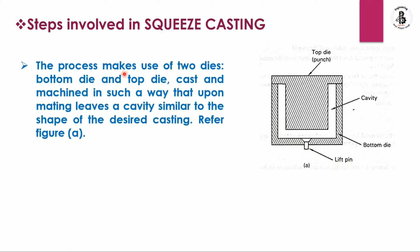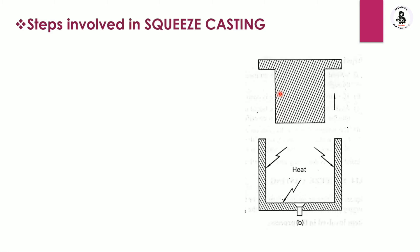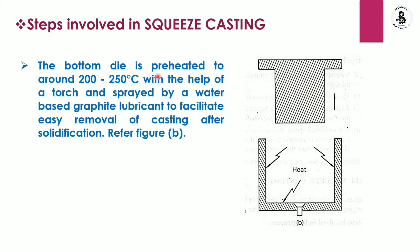The process makes use of two dies — a bottom die and a top die — cast and machined such that upon mating they leave a cavity similar to the shape of the desired casting. Complex geometries can also be produced. The bottom die is preheated to around 200 to 250 degrees centigrade with a torch and sprayed with a water-based graphite lubricant to facilitate easy removal of the casting after solidification.